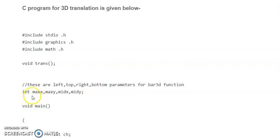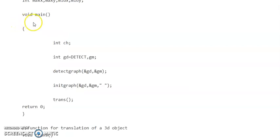Earlier we have discussed what is bar 3D function. Then we are declaring the variables as integer maxx, maxy, midx, and midy. Let's see the main function. You can see void main function. Inside this we have to declare integer ch variable, then gd and gm variables. Using detectgraph and initgraph you have to initialize this. Then you are calling trans function, then return 0 and close bracket.